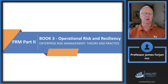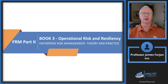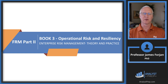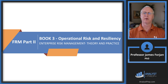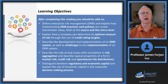This is FRM Part 2, Book 3, Operational Risk and Resiliency, and the chapter on Enterprise Risk Management Theory and Practice. This chapter is a general chapter that applies to corporations in general and not specifically to the financial institutions industry. There are going to be elements and pockets of this chapter that apply to risk management from a banking perspective, and I'll try to make those links as we go through the slide deck.